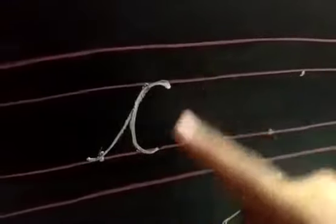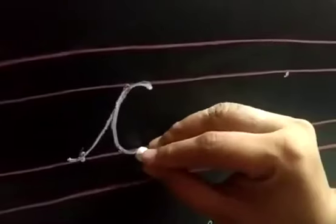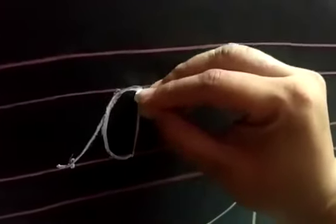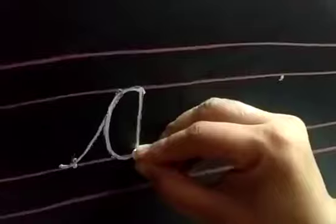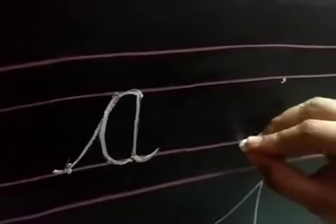Now with letter C we will write letter A. First we have to go up, then down, then kick. Let us see. Go up, down and kick.